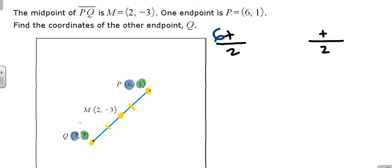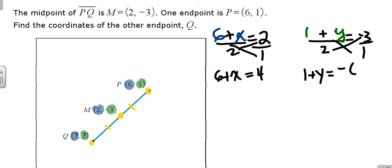In this case, our X's are 6 plus an unknown X, and it's going to give us the answer of 2. And then our Y's are 1 plus an unknown Y, and that's going to give you negative 3. In other words, 2, negative 3 is the result of doing the midpoint equation. To solve, you put this over 1 and then you would cross multiply. So that's the algebraic way.